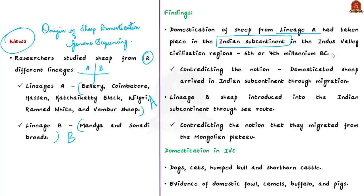This shows that the Indian subcontinent was one of the domestication centers. This is a new claim because previously it was believed that domesticated sheep arrived in the Indian subcontinent through migration, so this belief was ruled out by this new finding. On the other hand, when it comes to sheep belonging to Lineage B, the research found that their introduction into the Indian subcontinent happened through sea route. This again contradicts the previously held belief that they migrated from the Mongolian plateau.